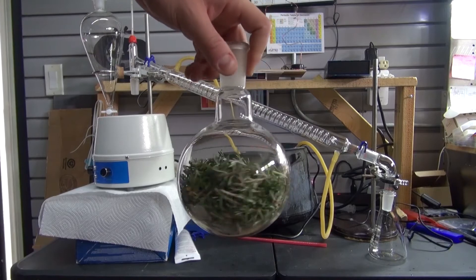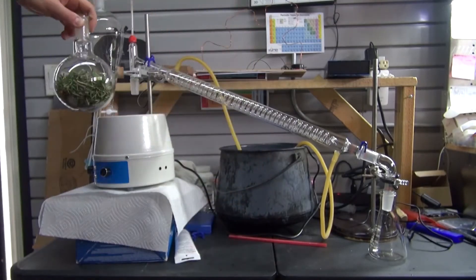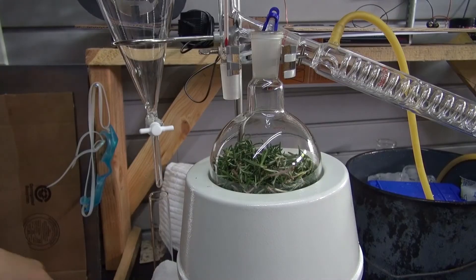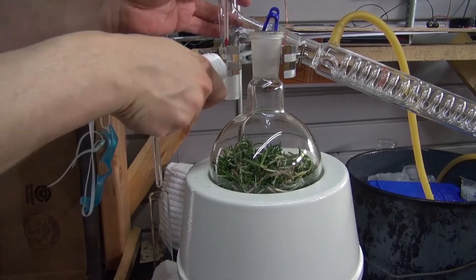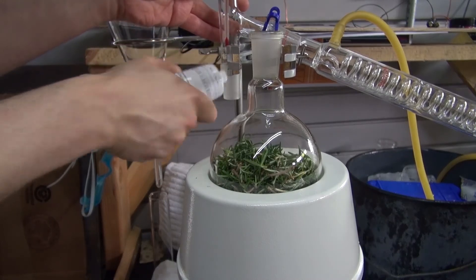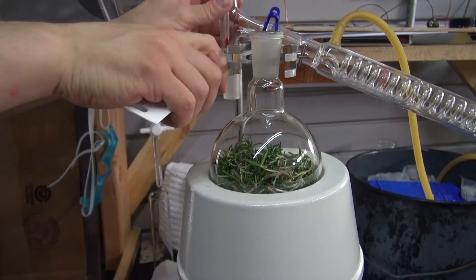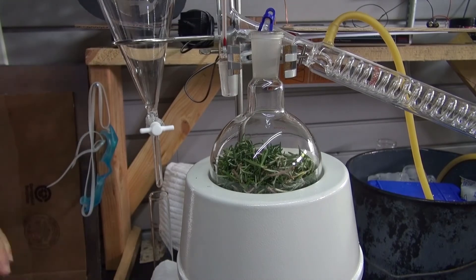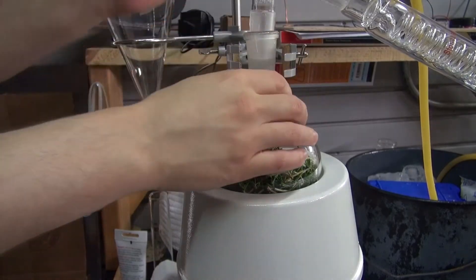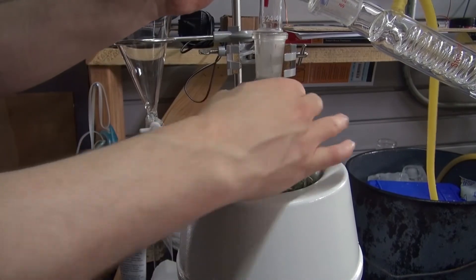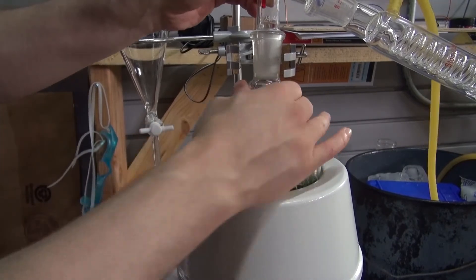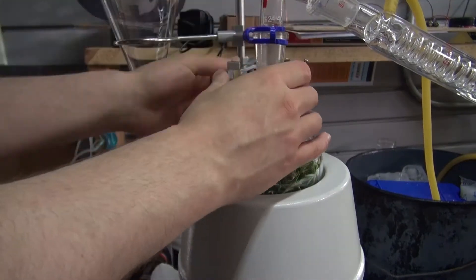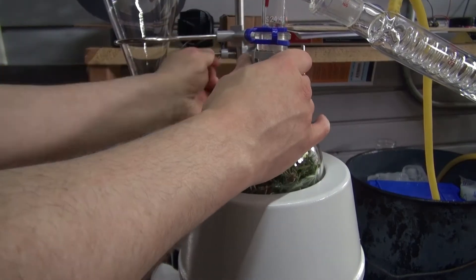Next I'm going to take this Florence flask that's filled with rosemary and place it on top of the heating mantle. Then take some food grade vacuum grease and put it onto the thermometer joint. Now take this thermometer joint and connect to the Florence flask and twist the flask to spread the grease. Put it into place and put all the clamps together. It should look just like this.